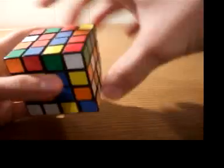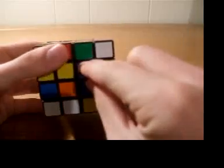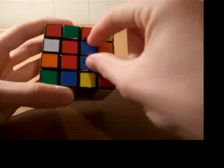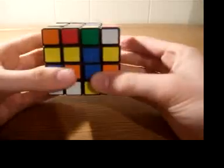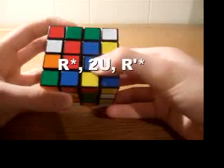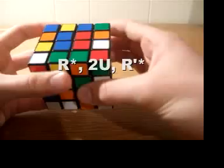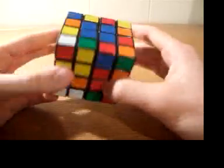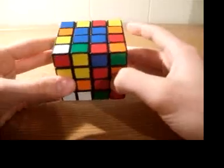and whenever you do the second one, you have to make sure that the wedge in the middle layer is going to take the place of the wedge that's already in the top layer, or you can use R prime star, 2u, R prime star, and you should have two solved opposite centers.